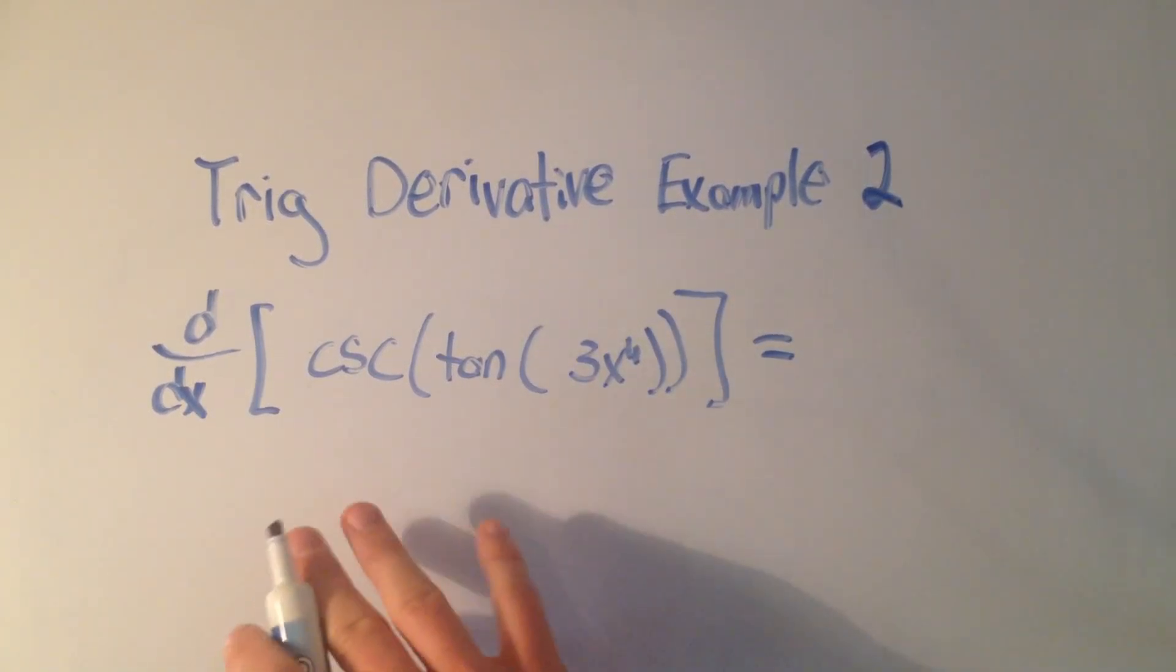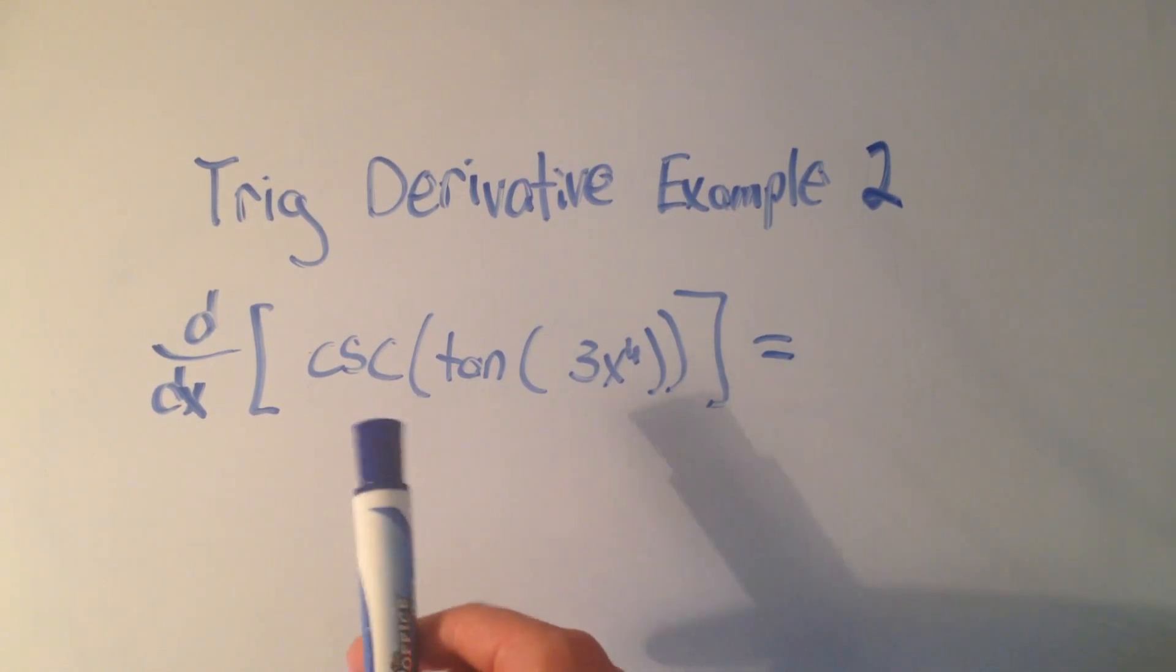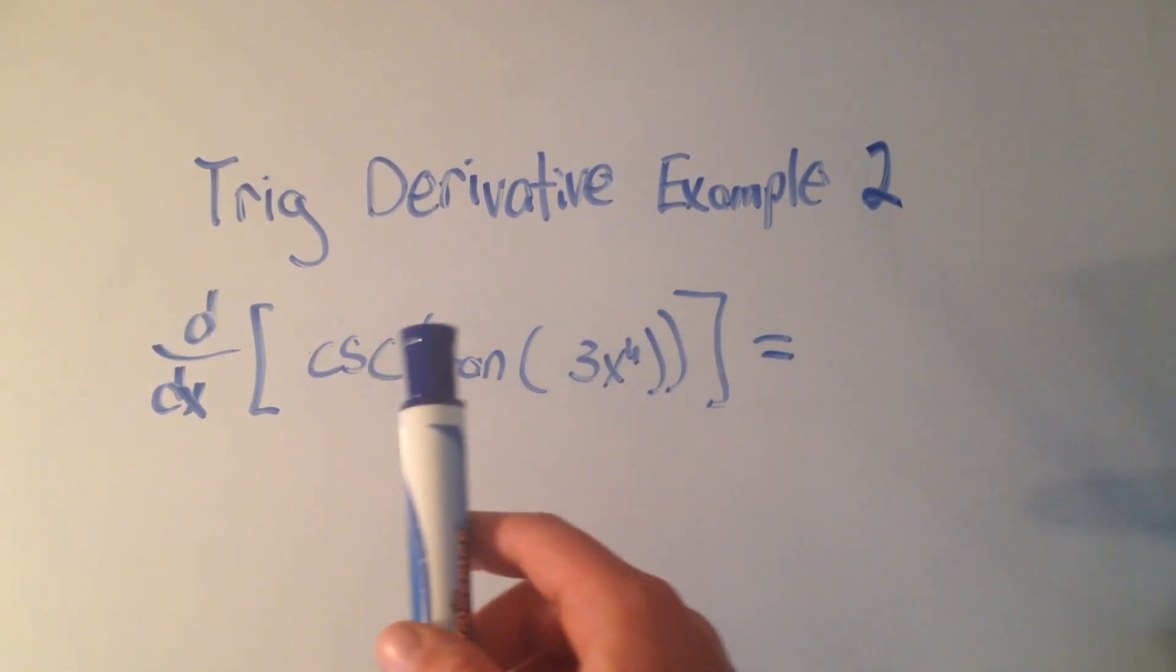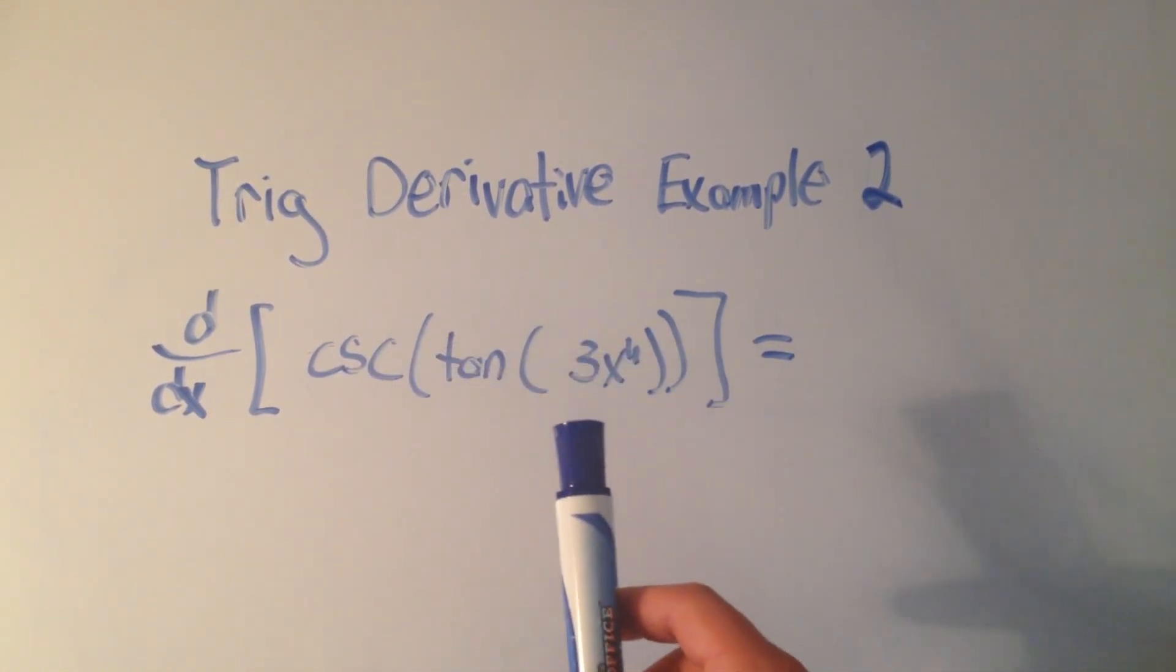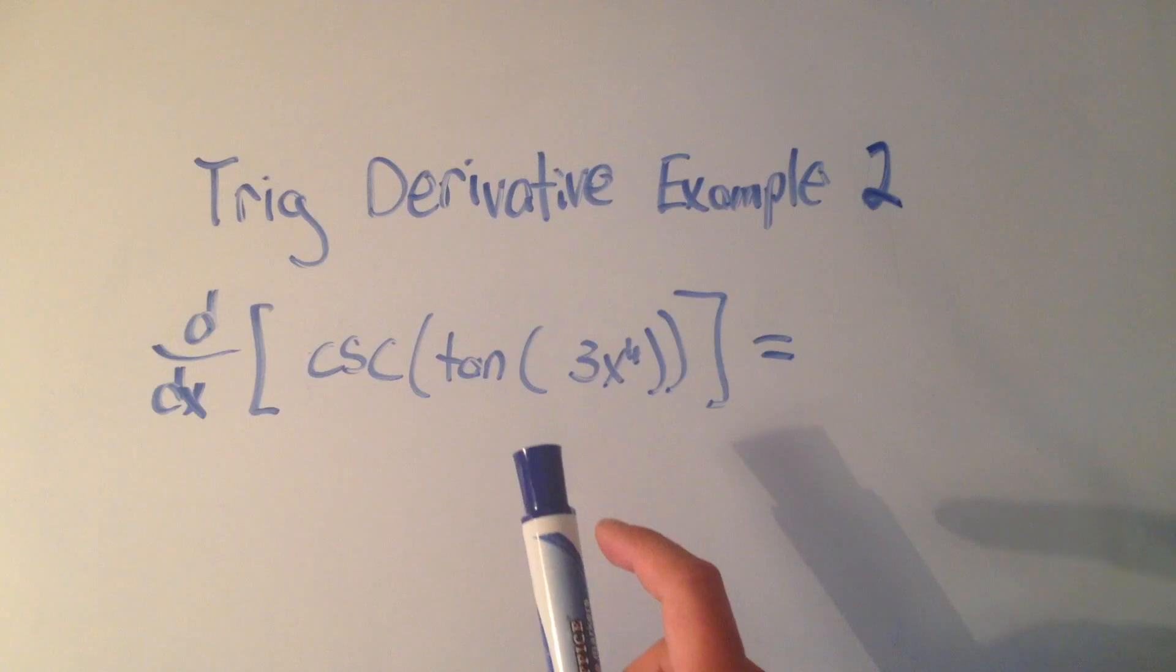I have here what I think is a pretty good one for you. What I want to do is take the derivative of cosecant of tangent of 3x to the fourth. So this is like a chain rule inside of a chain rule with trig functions.